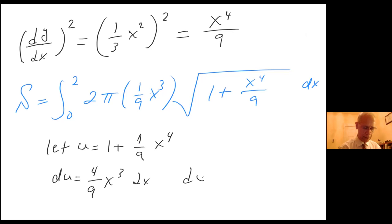And so dx equals nine over four times x cubed du. So let me be using that.